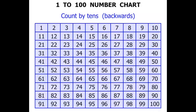We might not start at 100. We might start at 83. Again counting by tens backwards. So we're at 83: 73, 63, 53, 43, 33, 23, 13, and finally 3 on the number chart there.